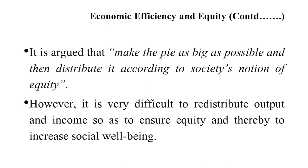However, it is practically not possible to simply make the pie as big as possible. It is very difficult to redistribute output and income so as to ensure equity and thereby increase social welfare. In a perfectly competitive market it is generally assumed that total economic surplus is the true measure of social welfare, but the value of a rupee does not give the same satisfaction to all producers and consumers, whether they are rich or poor. So perfect competition is not possible in all cases, and other markets are also working.